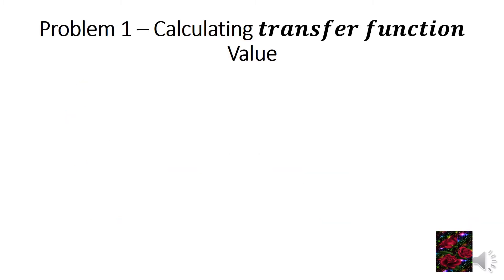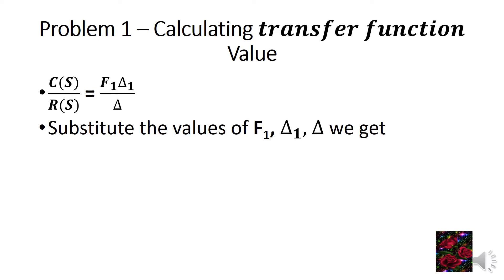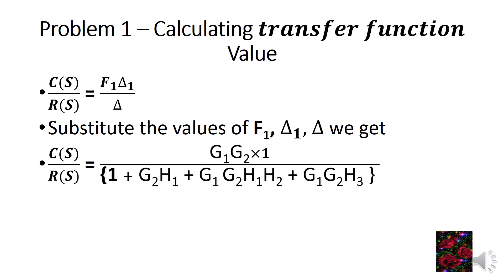Calculating transfer function C(s)/R(s): C(s)/R(s) equals F1·delta1 divided by delta, since we have only one forward path F1. Substituting the values, C(s)/R(s) equals G1·G2 (the value of F1) times 1 (the value of delta1), all divided by (1 + G2·H1 + G1·G2·H1·H2 + G1·G2·H3). This is the final answer for Problem 1.